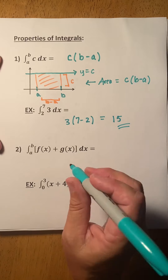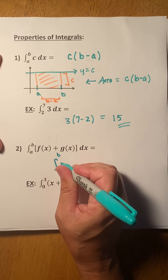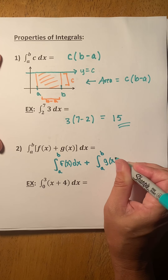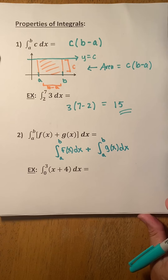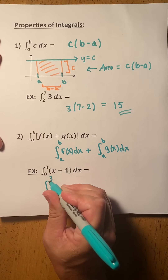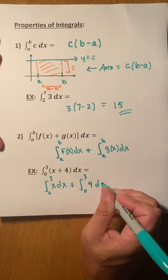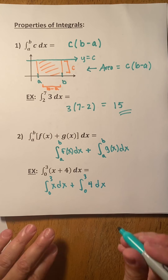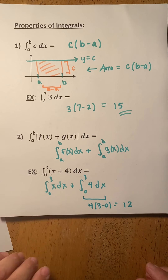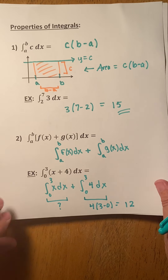We can distribute an integral through a sum — the integral of a sum is the sum of the integrals. So if you wanted to integrate x plus 4 from 0 to 3, we could split it into the integral from 0 to 3 of x dx plus the integral from 0 to 3 of 4 dx. We already know that integral of 4 from 0 to 3 is 4 times (3 minus 0), which is 12. But what is the integral of x dx from 0 to 3?